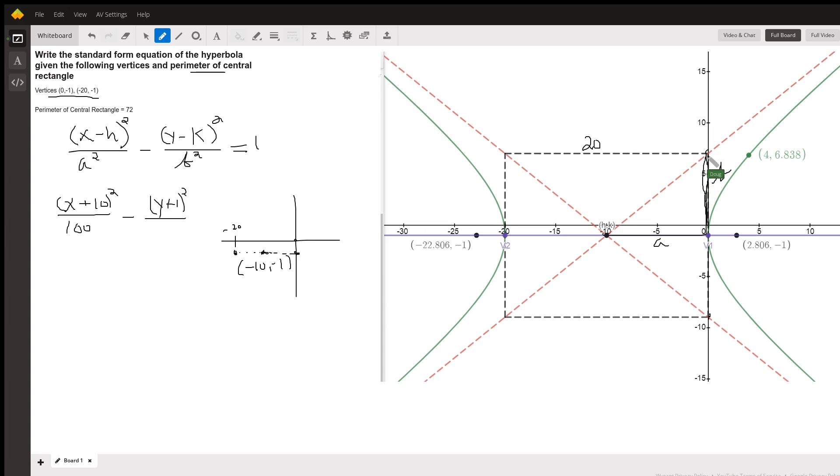So a is just this part, which is half of the 20, or 10. That means b must be 8, because that's half of 16. But b squared is 64.